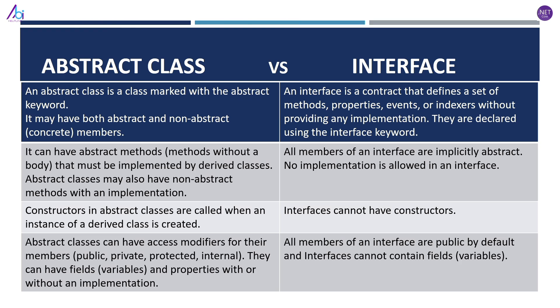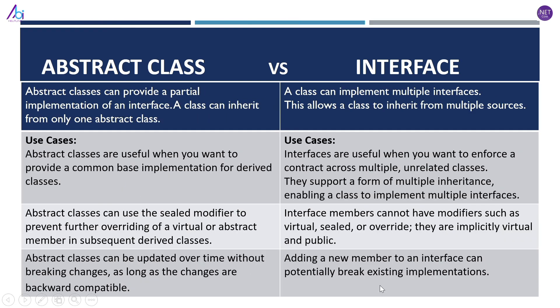All members of an interface are public by default, and an interface cannot contain fields or variables — it only contains method definitions. Additionally, an abstract class can provide a partial implementation of an interface.